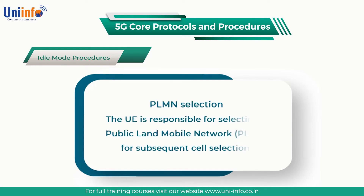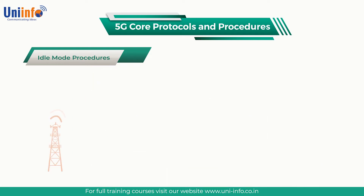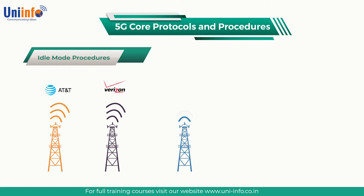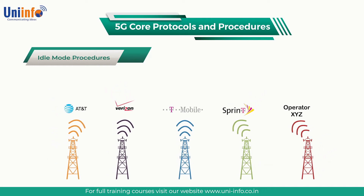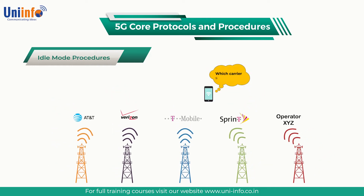The UE is responsible for selecting a public land mobile network for subsequent cell selection. A PLMN is identified by its PLMN Identity broadcast within System Information Block 1, i.e., SIB1. A single cell can belong to multiple PLMNs, so SIB1 may broadcast a list of PLMN identities.